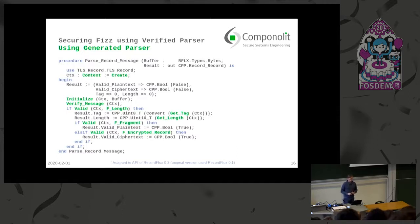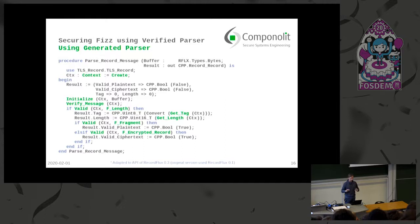For example, we check if the length field is valid before accessing its value using the get_length function. The nice thing about Spark is that we can prove the parser is used correctly. If you forget to check that the length field is valid but try to access its value anyway, the Spark tools will show that the precondition of the get_length function is not fulfilled. This ensures we don't do anything unsupported that could lead to errors.